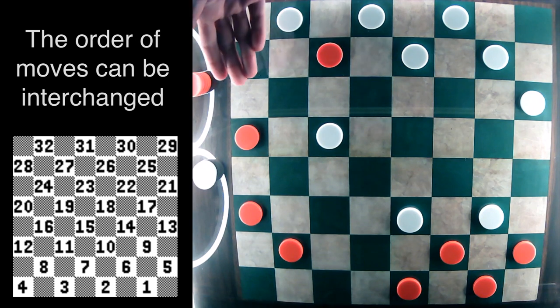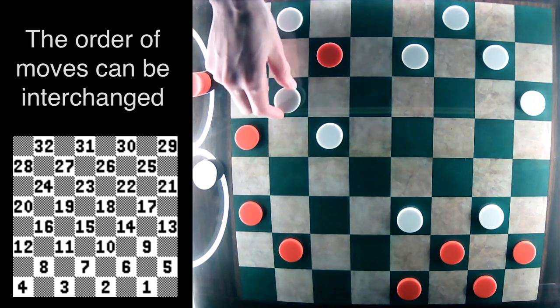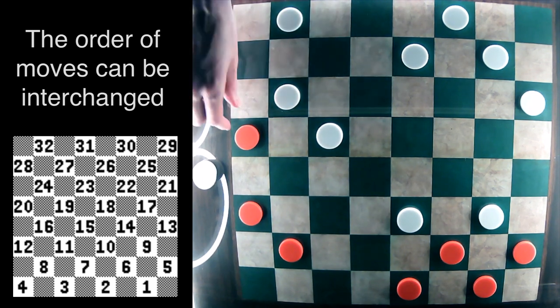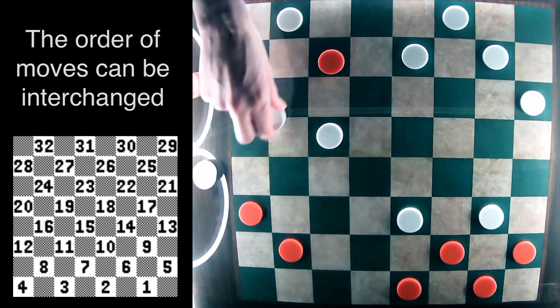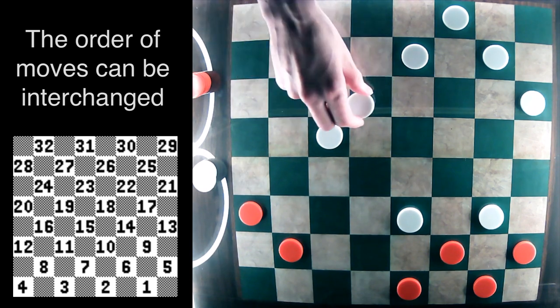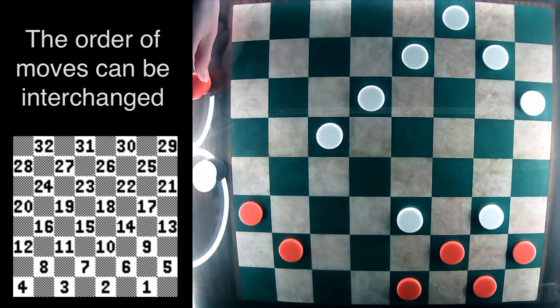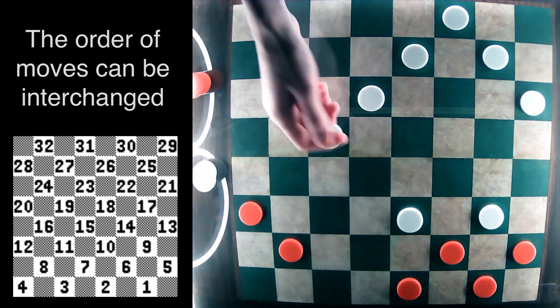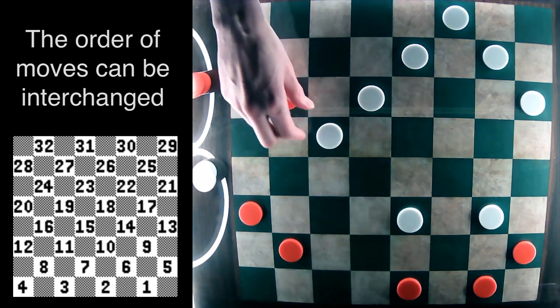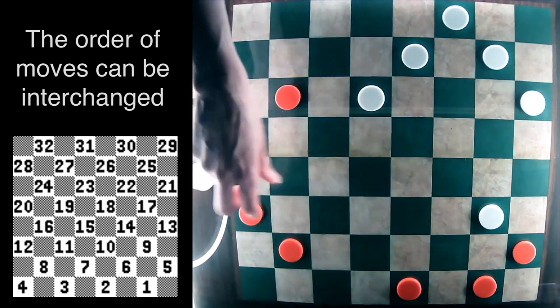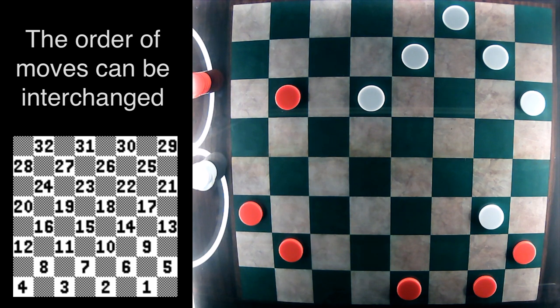And now there's really not much of a choice here for white. Sure, it can take this piece back, just delaying the inevitable. And then red has the double jump here with this piece on 9, totally trapped and lost. So that's what red is hoping for.